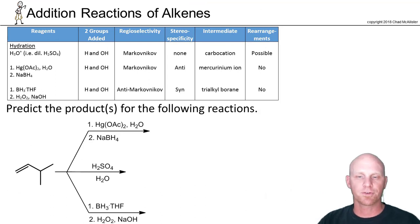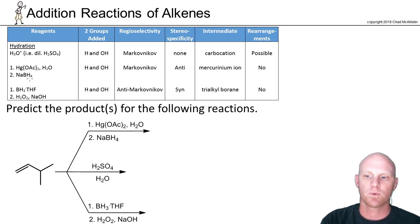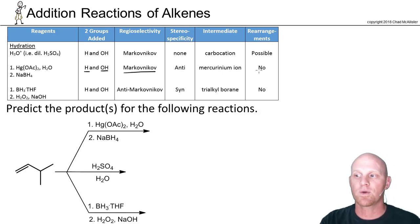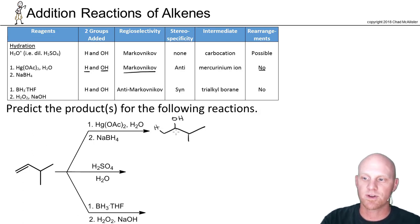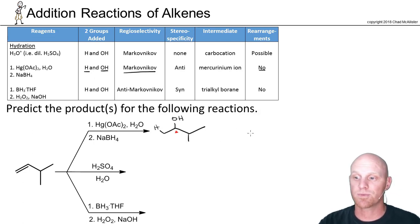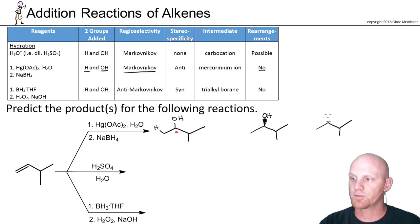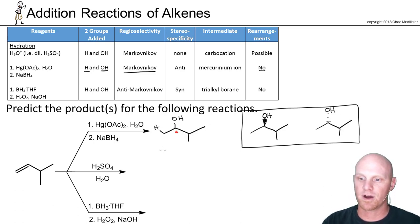Now we're going to take a look at the three different hydration reactions and see what's the same and what's different. We'll start with oxymercuration-demercuration. Oxymercuration-demercuration adds H and OH, Markovnikov, and rearrangements are not possible. So we're going to add H to the less-substituted side and the OH to the more-substituted side. Those two new sp3 carbons — only one of them is a chiral center. As a result, you can form both the R and the S versions, giving a pair of enantiomers.